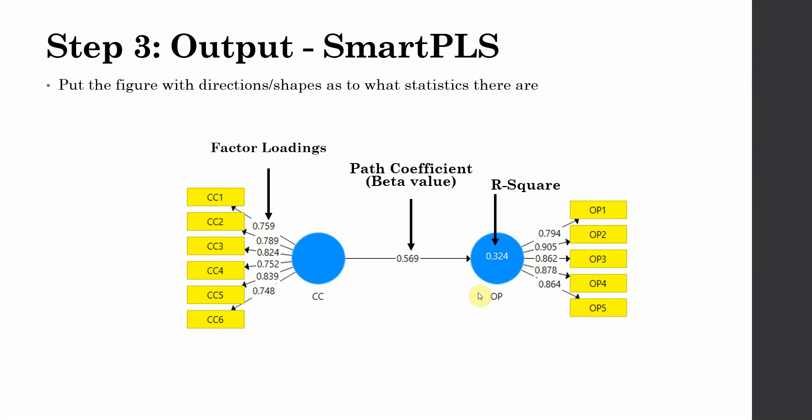Now in this case, what is an endogenous variable? An endogenous variable is one that is being influenced by another variable. Now the endogenous variable can later become an exogenous variable if it influences another variable. Now that may be a bit complex for now and we are going to talk about this later.